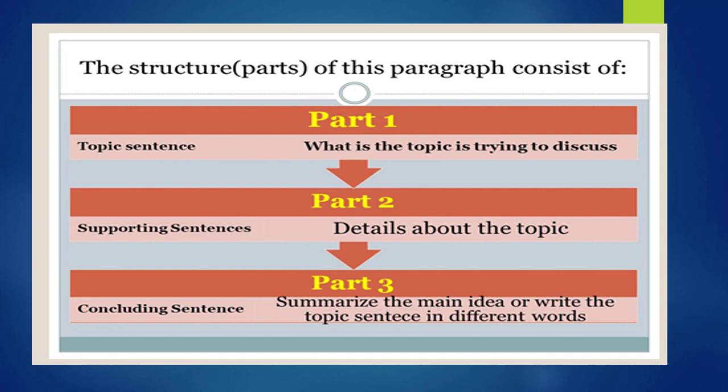Expository paragraph: this paragraph explains an idea. It is also called an information paragraph. For example, you can write an expository paragraph explaining how to make chocolate chip cookies. Persuasive paragraph: this paragraph tries to convince the reader of something. This type of paragraph may start with a phrase like 'I think that.' The support section may include sentences that start with 'One reason is.' It may end with something like 'This is why I think that.' For example, you can write a persuasive paragraph telling why people should vote for you for class president.